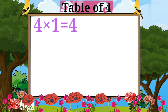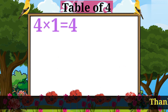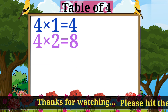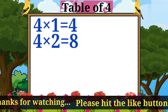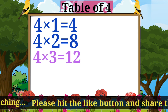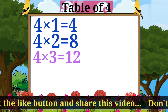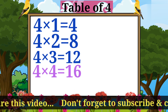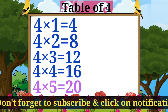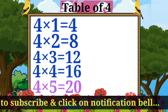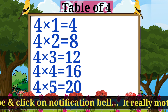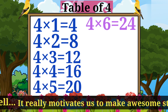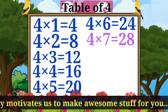Four ones are four. Four twos are eight. Four threes are twelve. Four fours are sixteen. Four fives are twenty. Four sixes are twenty-four.